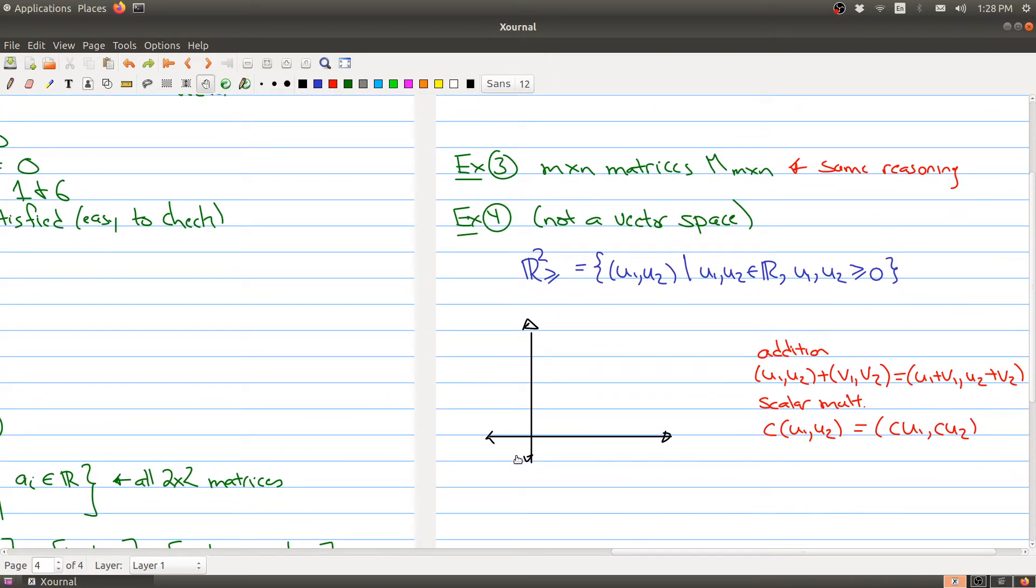Now sometimes it's actually very useful when you're trying to learn a concept to kind of understand when things go bad. So let me give you an example of something that's not a vector space. In this example, I want you to look at the set R2 greater than or equal to, and what that means is I want to take all the points in R2 where both of the coordinates are zero or bigger. And let me draw where these points are. So these are all the points in R2 in my space right here. The red area is my points in R2 greater than or equal to.